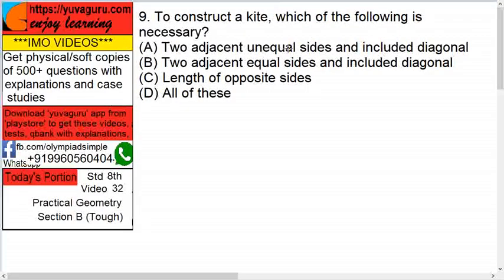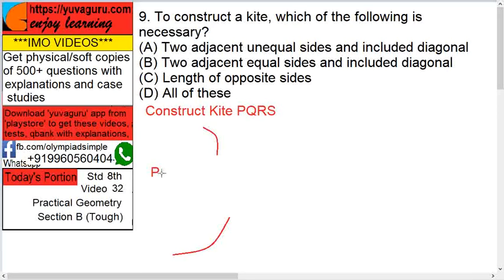Option A. Two adjacent unequal sides and included diagonal. Okay. Let's start with A. Let's construct a kite PQRS. Start with point P. So, with option A...